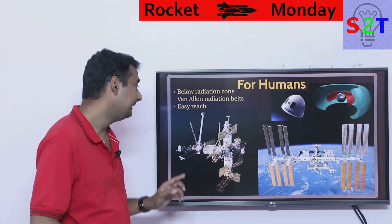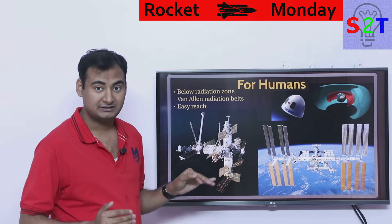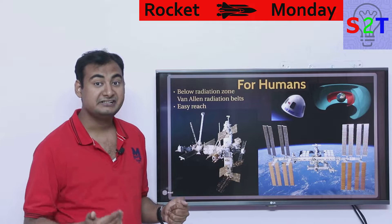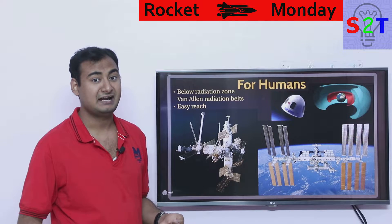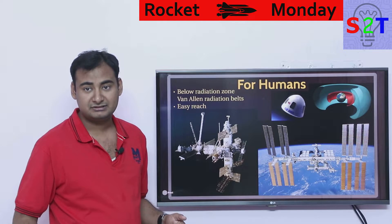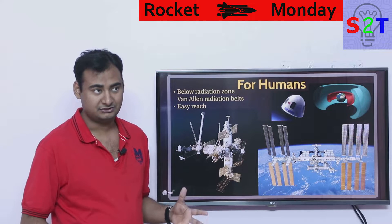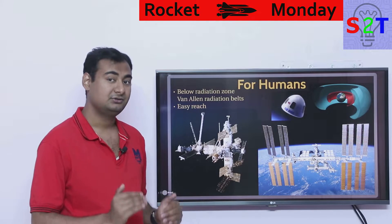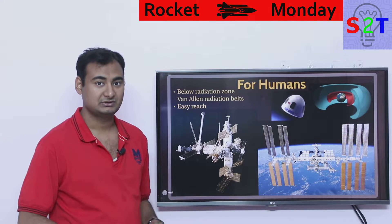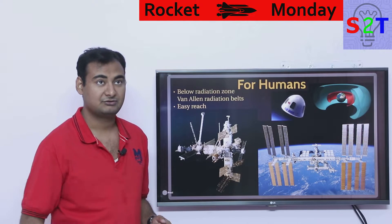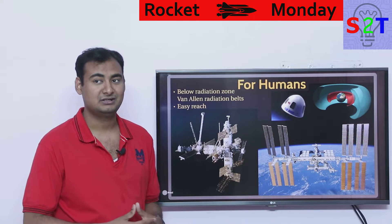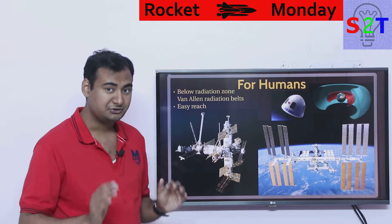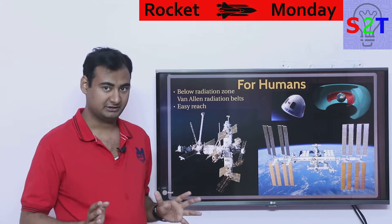On top of that, LEO is very easy to reach. Your rocket can reach it in 10 minutes flat — that's it. Like you fire the Space Shuttle, boom, in 10 minutes you are there. That's how easy it is to reach. Now if you did that for geostationary, you might spend one or two hours in the rocket itself. So you have to understand, for humans this is perfect.